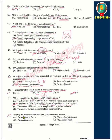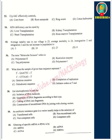Question 52: Identify the most infectious and fatal type — option D, cotton boll worm. Question 53: ADA deficiency can be cured by bone marrow transplantation. This is an enzyme deficiency.